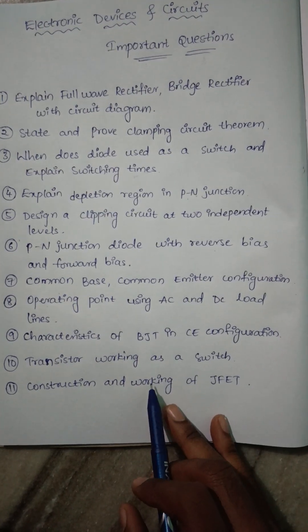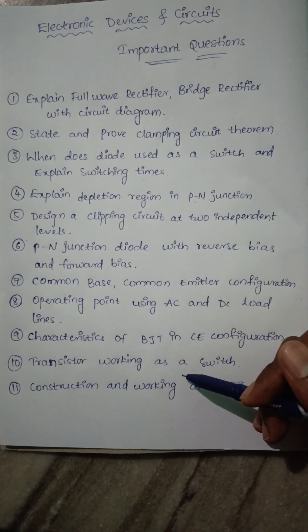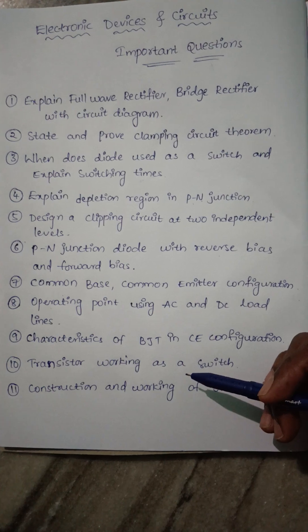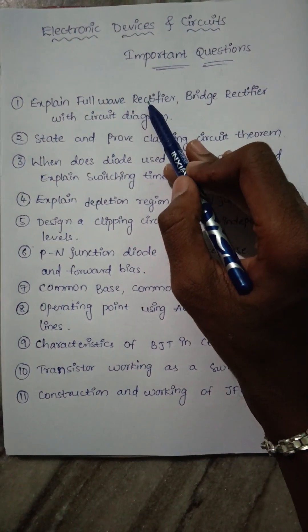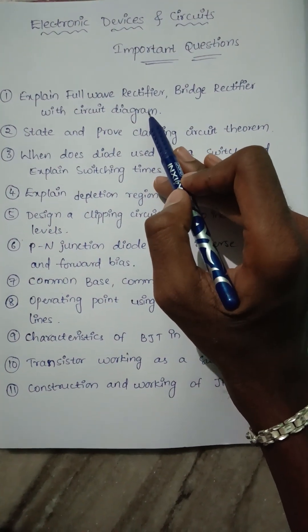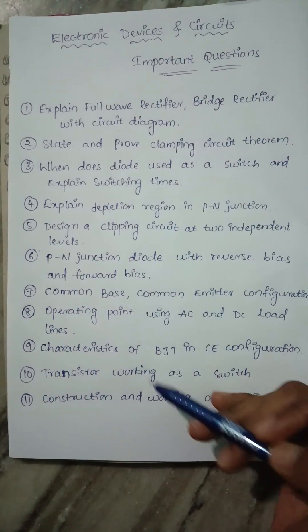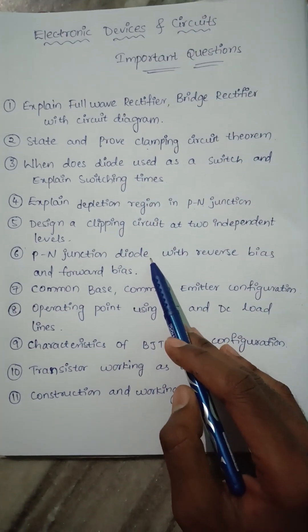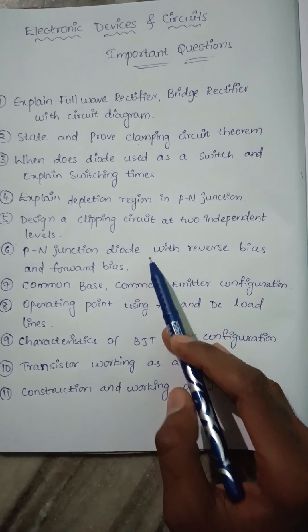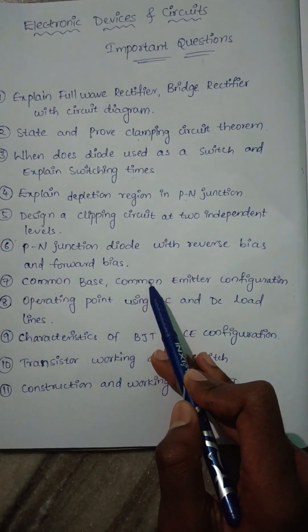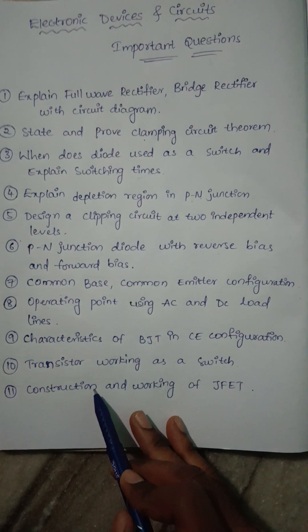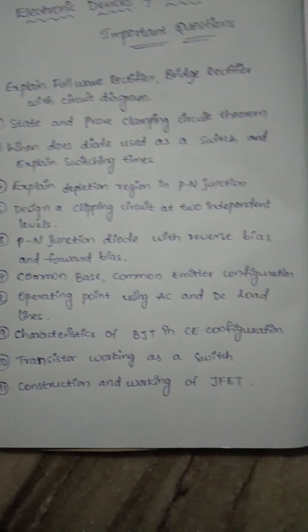The very important questions in this paper are: full wave rectifier and bridge rectifier with circuit diagram; clamping circuit theorem; PN junction diode with reverse bias and forward bias; CB, CC, and CE configuration; and construction of JFET.